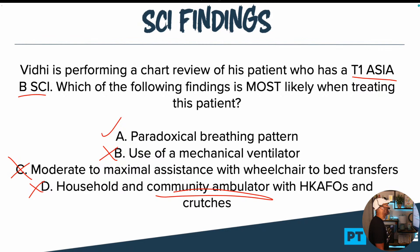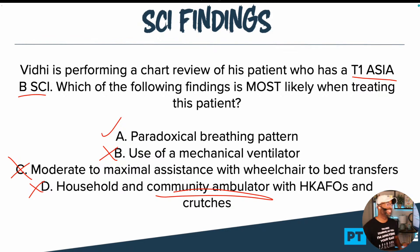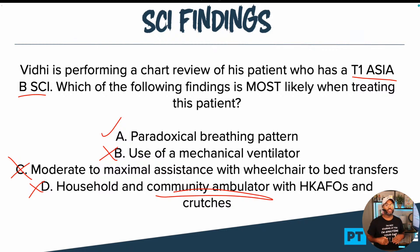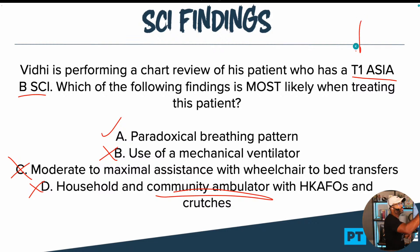Congratulations to those of you who got this one correct — this is a tough question. It was all about understanding ASIA B and what that means. Remember, if it's ASIA B, that means there's no motor function preserved below the level of the injury. We know the level of injury is T1.